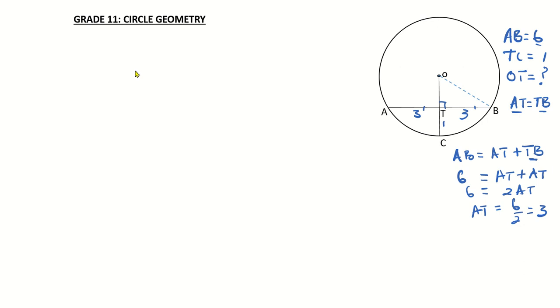We must determine OT knowing AT, TB, and TC. I added a construction line from O to B, and you can see this is a right angle triangle, so it allows us to use the Pythagoras theorem.